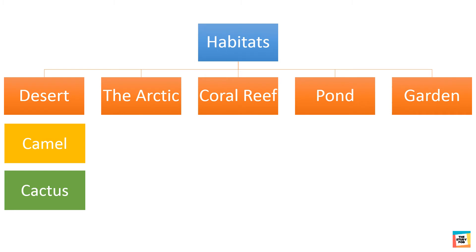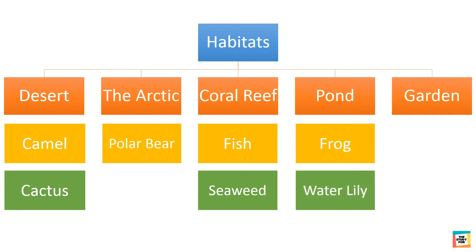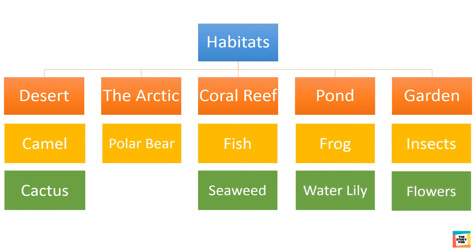In the Arctic, we can find polar bears. They are the fauna of that place. In the coral reef, we can find different kinds of fish and seaweeds. In the pond, we can find frogs and water lilies. And in the garden, we can find flowers and insects. Can you tell which one of these are flora and which are fauna?